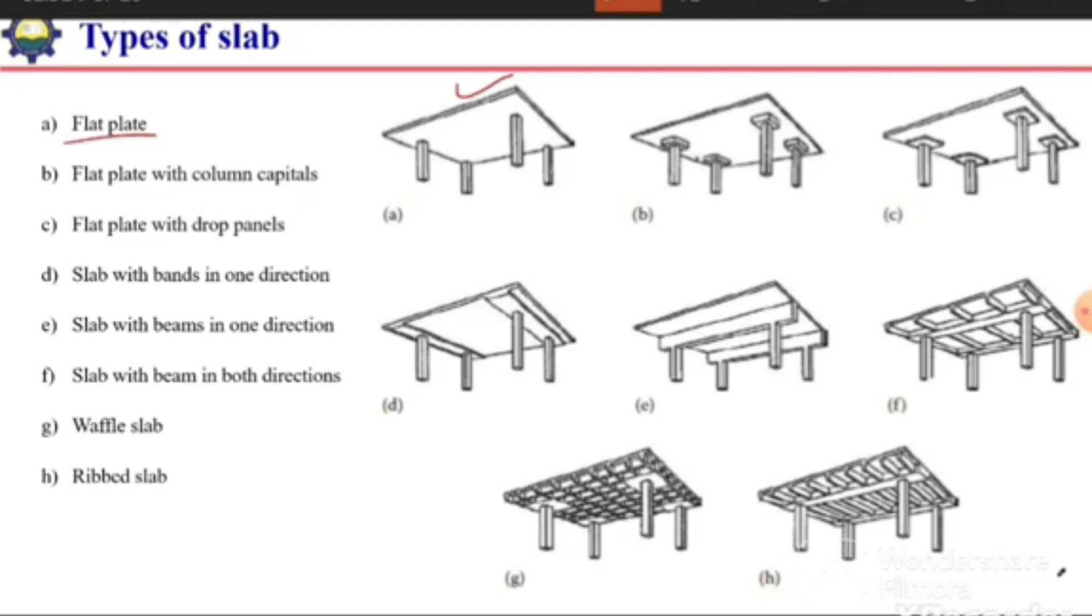This is a slab without any beams, directly resting on the column. The second is flat plate with column capital—we have a flat plate with column capitals, the enlarged head of the column. The next is flat plate with the drop panel, enlarged thickness of the slab in the periphery of the column.